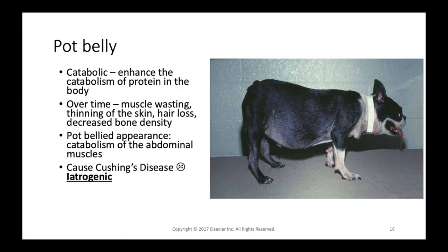Corticosteroids are considered catabolic because they enhance protein breakdown to provide amino acids for gluconeogenesis, which in turn increases blood glucose. Over time these catabolic effects manifest clinically as muscle wasting, thinning of the skin, hair loss, and decreased bone density. With long-term high-dose use, the classic pot-bellied appearance in dogs appears due to catabolism and atrophy of the abdominal muscles, leading to loss of abdominal muscle tone and inability to tuck up the abdominal viscera.